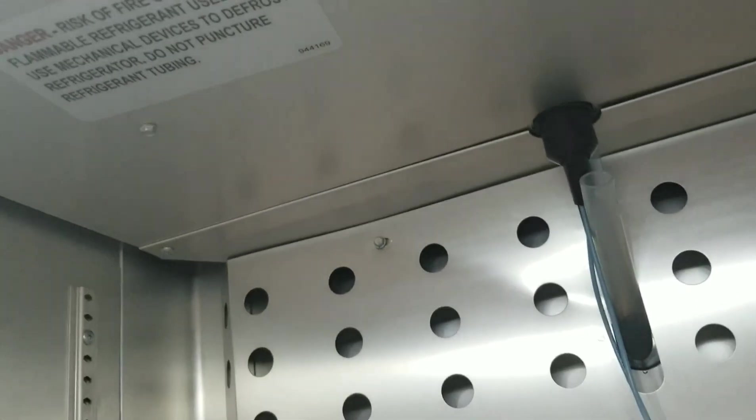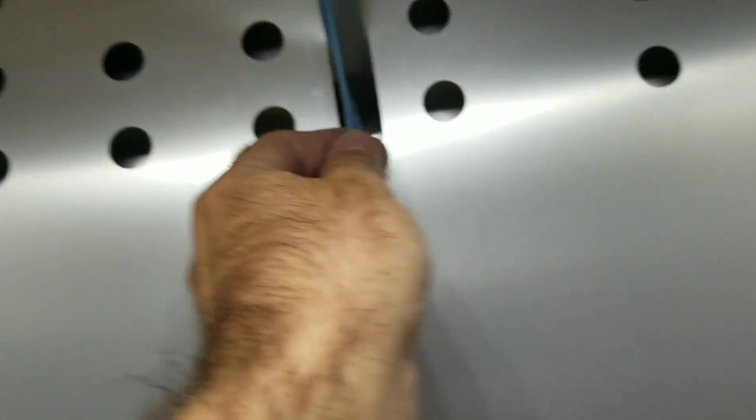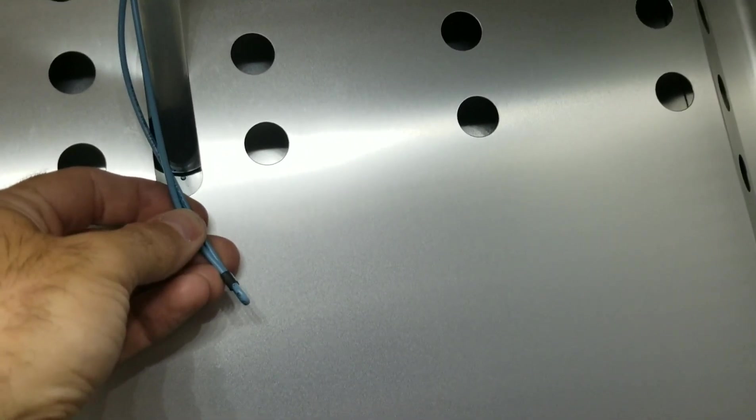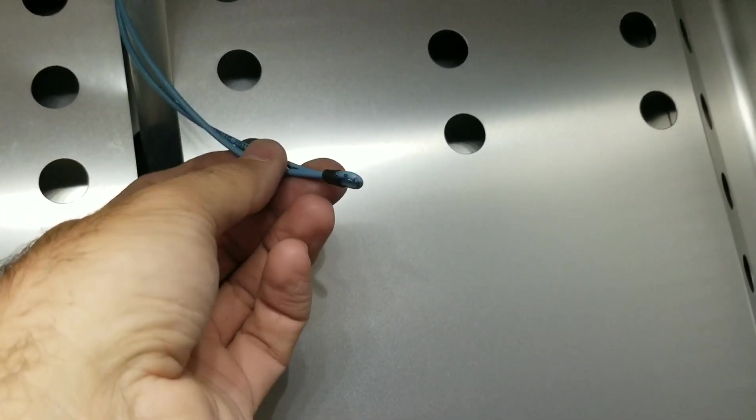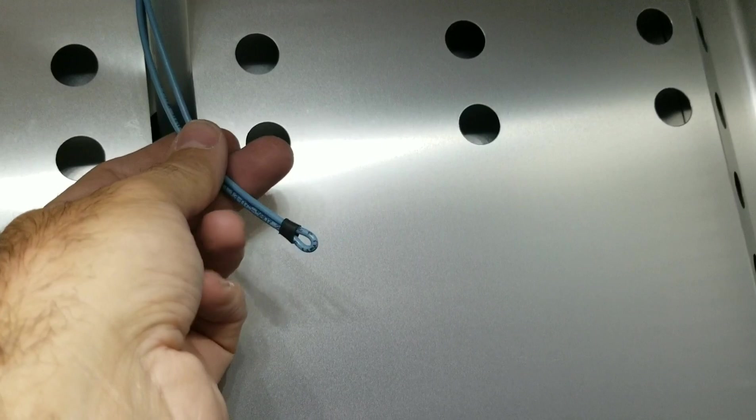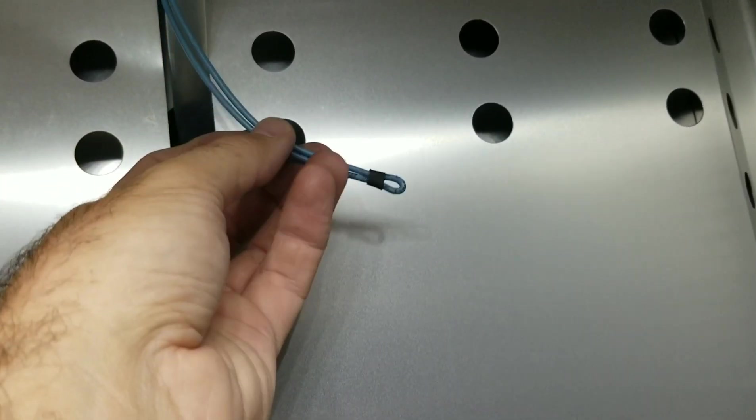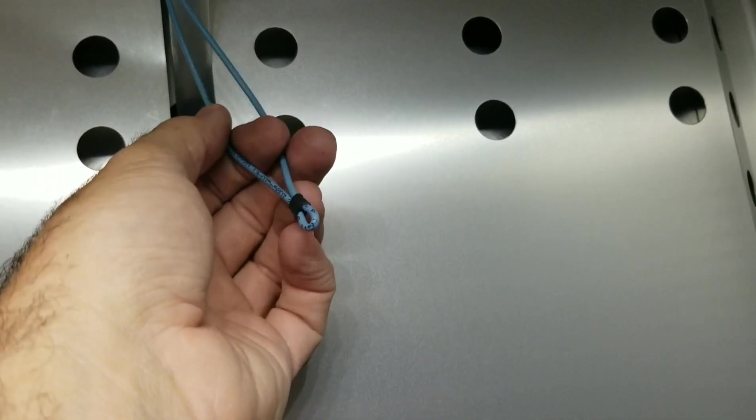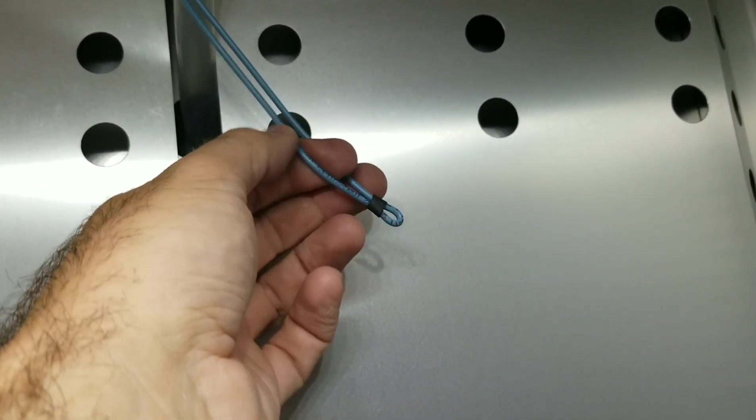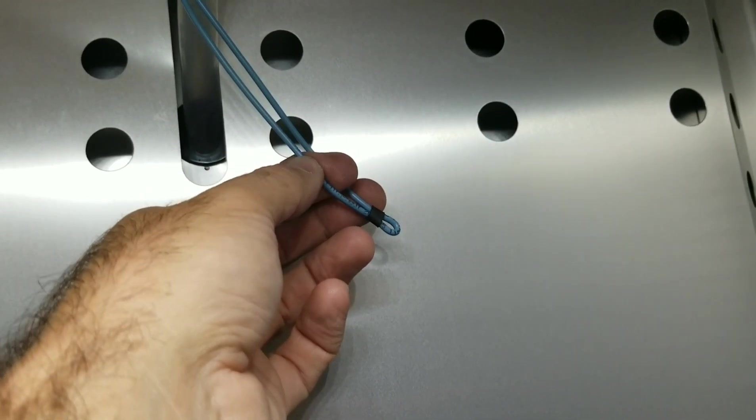All right, so everything's back together. I have the drain heater pulled right now because once our evaporator gets down to a low enough temperature, we're going to throw it into defrost and make sure this is getting warm to the touch or hot to the touch. And we're going to try to get an amp draw reading off of it. It might be difficult because it's going to draw very low amperage.